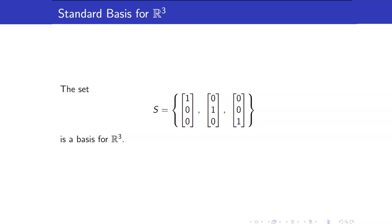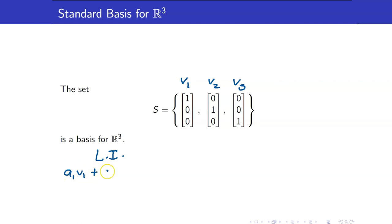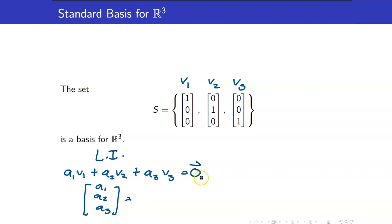Here is an example of a basis for R3. How do we check if it is really a basis? First, it has to be linearly independent. Let's call this V1, V2, and V3. Take note that if you form the equation a1·V1 + a2·V2 + a3·V3 = 0, then we would get that a1, a2, a3 equals the zero vector in R3, which is the column matrix consisting of all zeros.